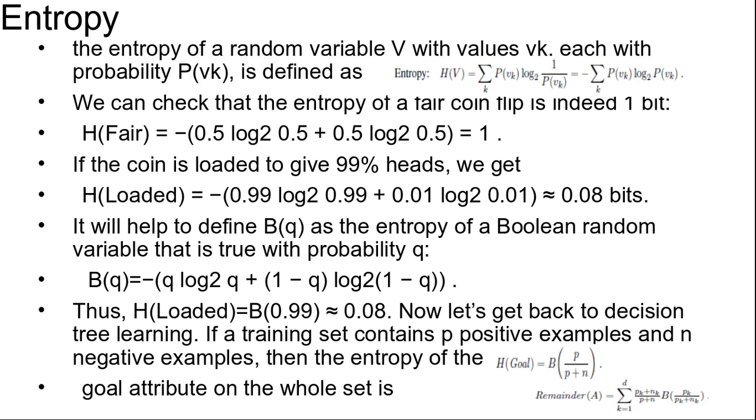A flip of a fair coin is equally likely to come up heads or tails, zero or one, and this counts as one bit of entropy. The roll of a fair four-sided die has two bits of entropy because it takes two bits to describe one of four equally probable choices.